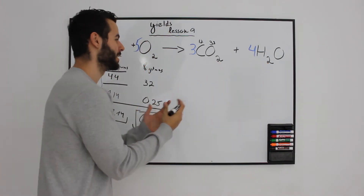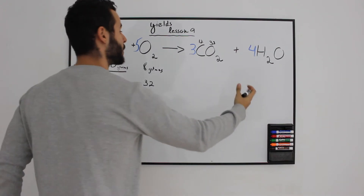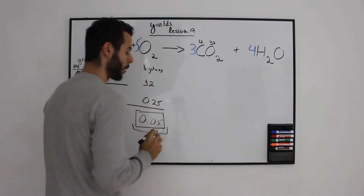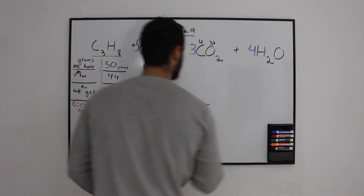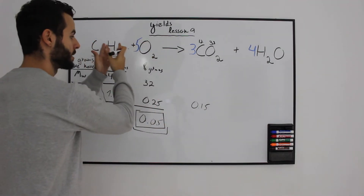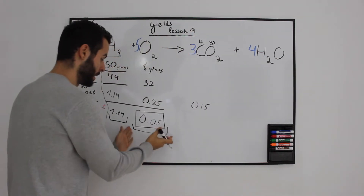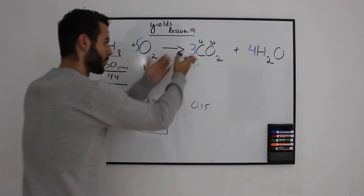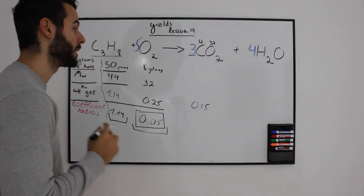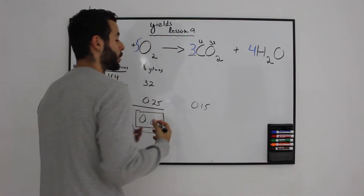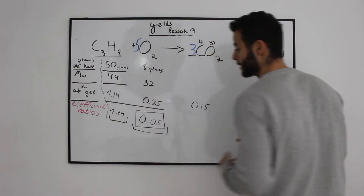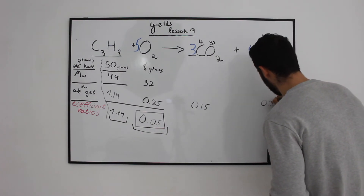Check out how easy it is to use this table to get the amount of products from the limiting reactant — multiply it by the coefficient. We have 0.15 moles of carbon dioxide because the limiting reactant can only produce product based on 0.05 moles, so we multiply by 3 and get 0.15. For water, we take that same number and multiply it by the water coefficient, getting 0.20 moles.